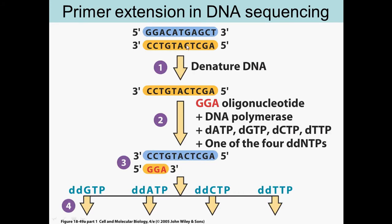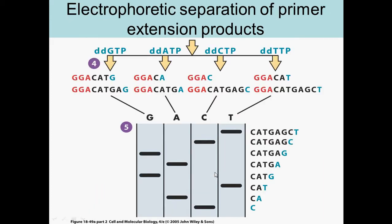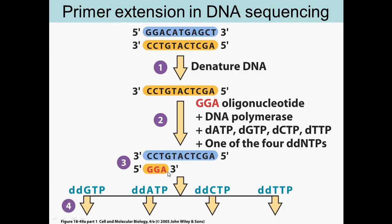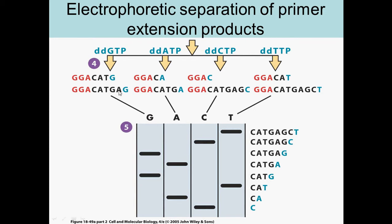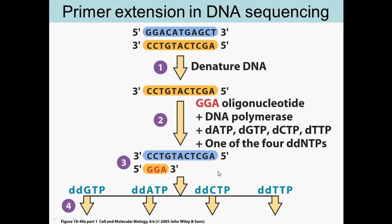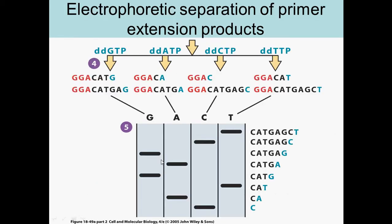Here's an example. You want to figure out the sequence of a DNA strand — you're pretending you don't know what the sequence is. You place the primer and then it extends 5' to 3'. You have four separate test tubes, each with regular dNTPs — dATP, and so on. When you run gel electrophoresis, you get fragments showing two G's, two A's, two C's, and two T's.